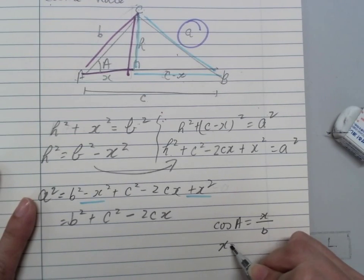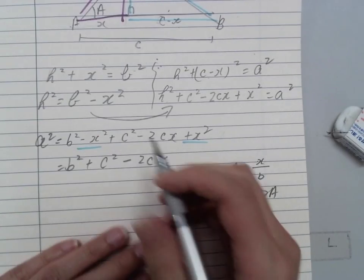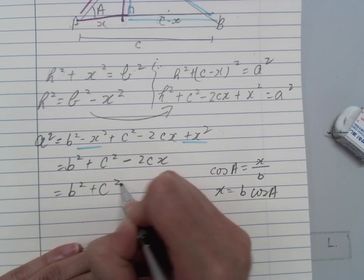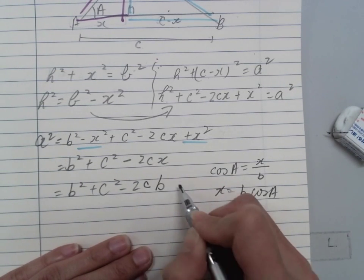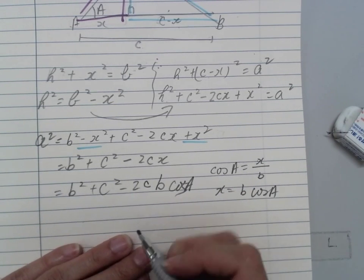So X will be equal to B cos A. Therefore I will have B² + C² - 2BC cos A.